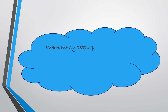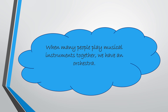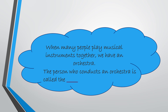Now, another question is: when many people play musical instruments together, we have an orchestra. An orchestra is a group of persons who play musical instruments together. The question is: the person who conducts an orchestra is called D-dash. The answer is C-O-N-D-U-C-T-O-R — that person is known as conductor.